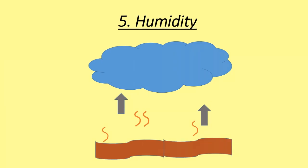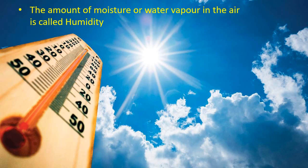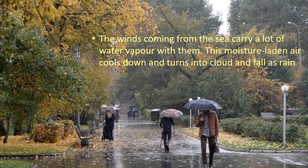Humidity. The amount of moisture or water vapour in the air is called humidity. Places near the sea are more humid than places located far away from the sea. This is why Chennai and Mumbai are more humid than Delhi. The winds coming from the sea carry a lot of water vapour, and this moisture-laden air cools down, turns into clouds, and falls as rain.